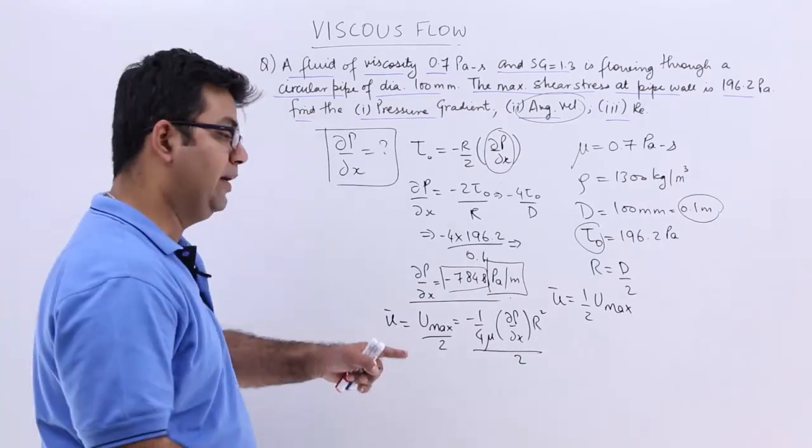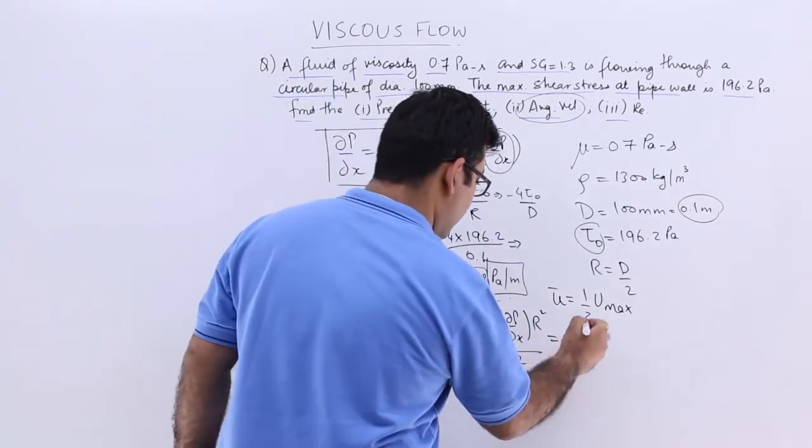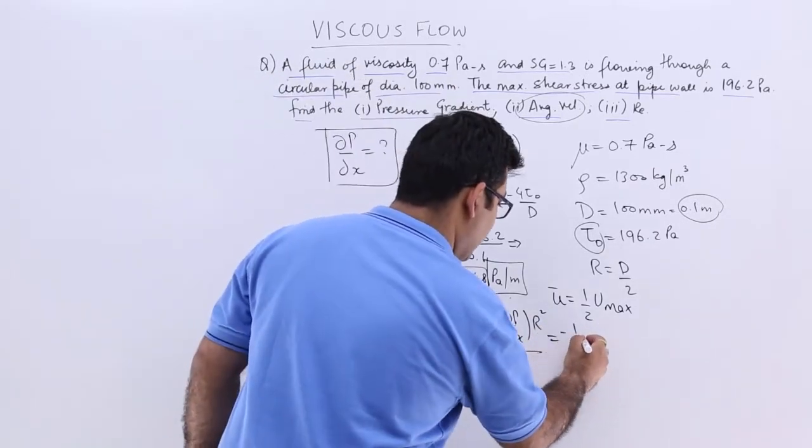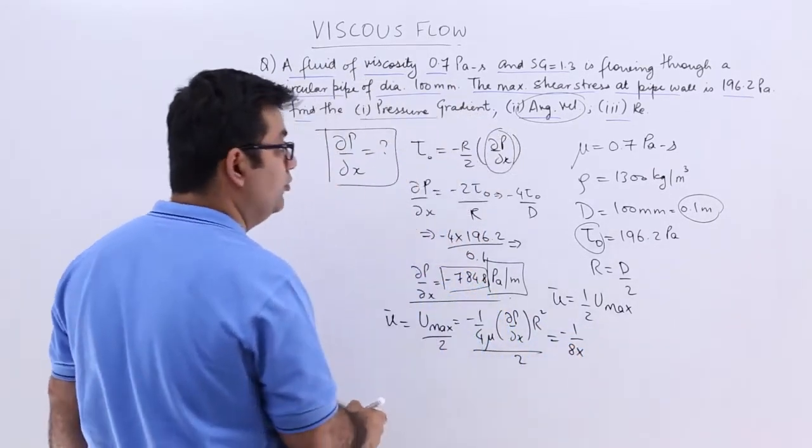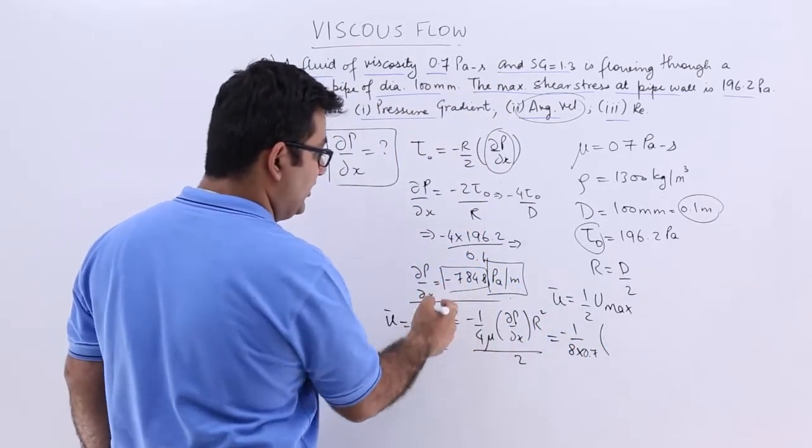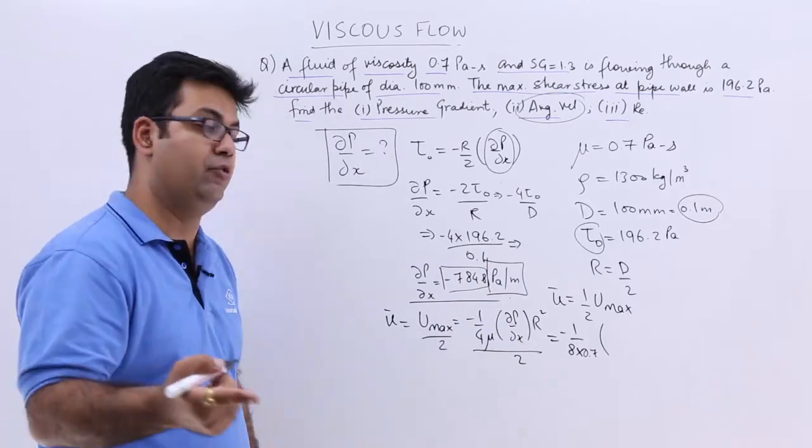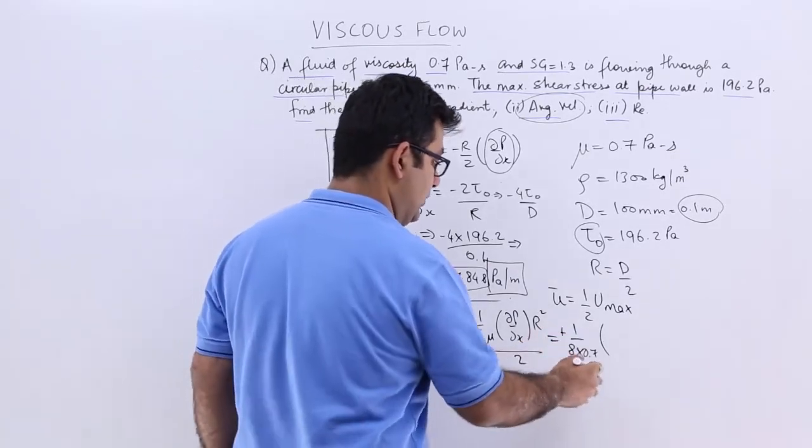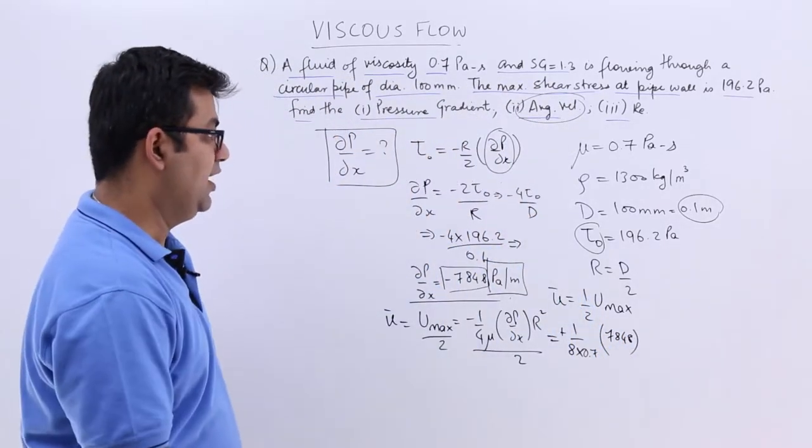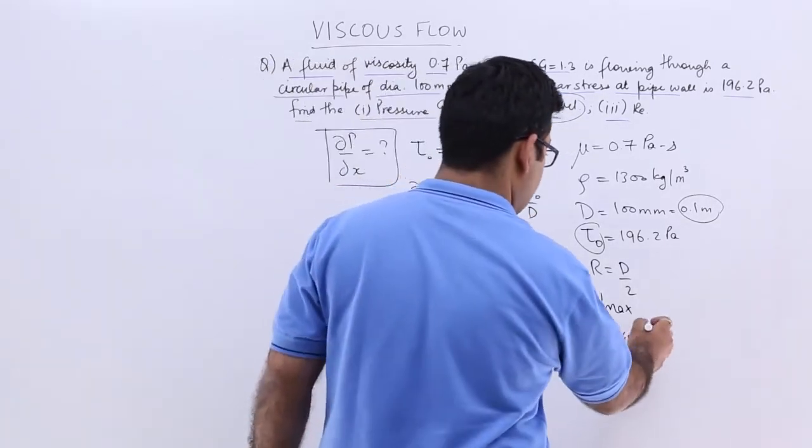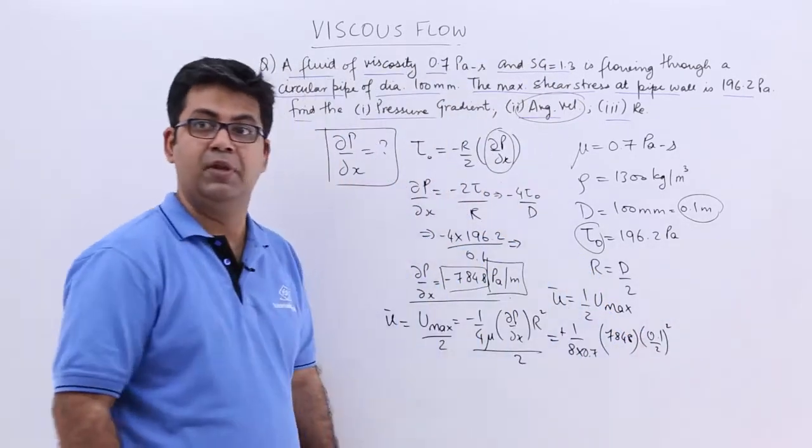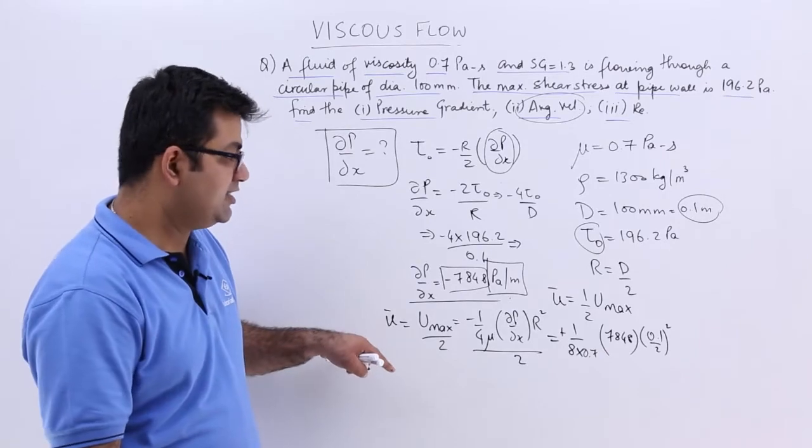Again, a simple mathematical substitution over here. So you will get, this would be minus 1 upon 8 into, mu is how much? 0.7 into curly P by curly X is minus 7848. So this will become plus, this is 7848 into R square. That is, 0.1 by 2 whole square. Alright. So this is the average velocity.